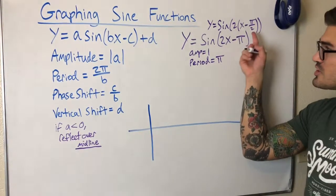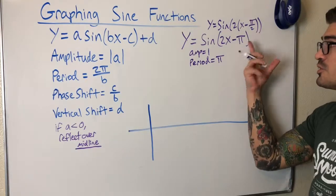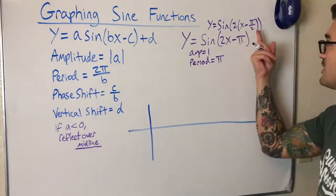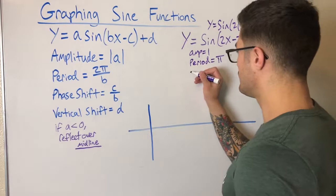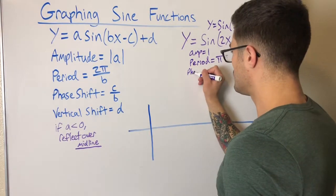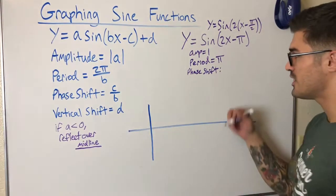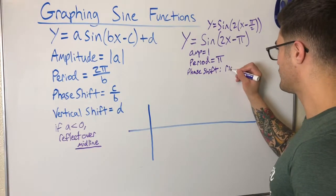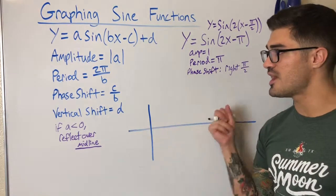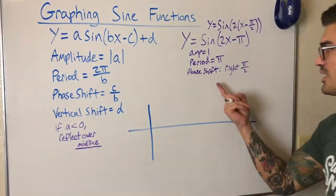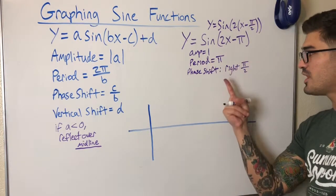Some instructors rewrite the function in factored form to read the shift directly — either way you divide C by B, which is dividing by two here. So the phase shift is pi over two to the right, since it's a positive shift (subtracting shifts right). There is no vertical shift, so our parameters are: amplitude equals one, period equals pi, phase shift right pi over two.